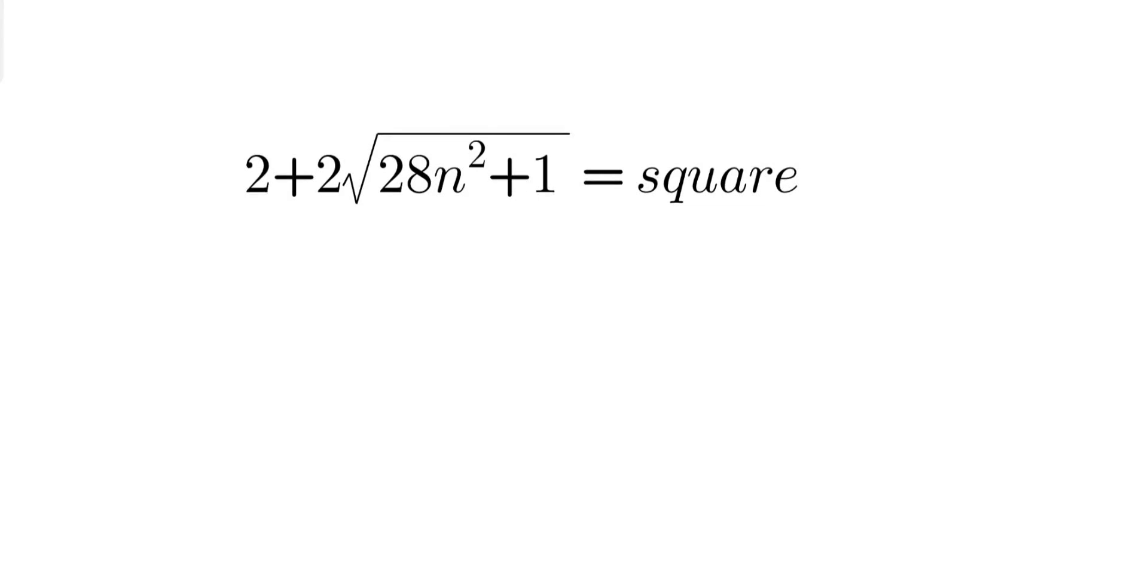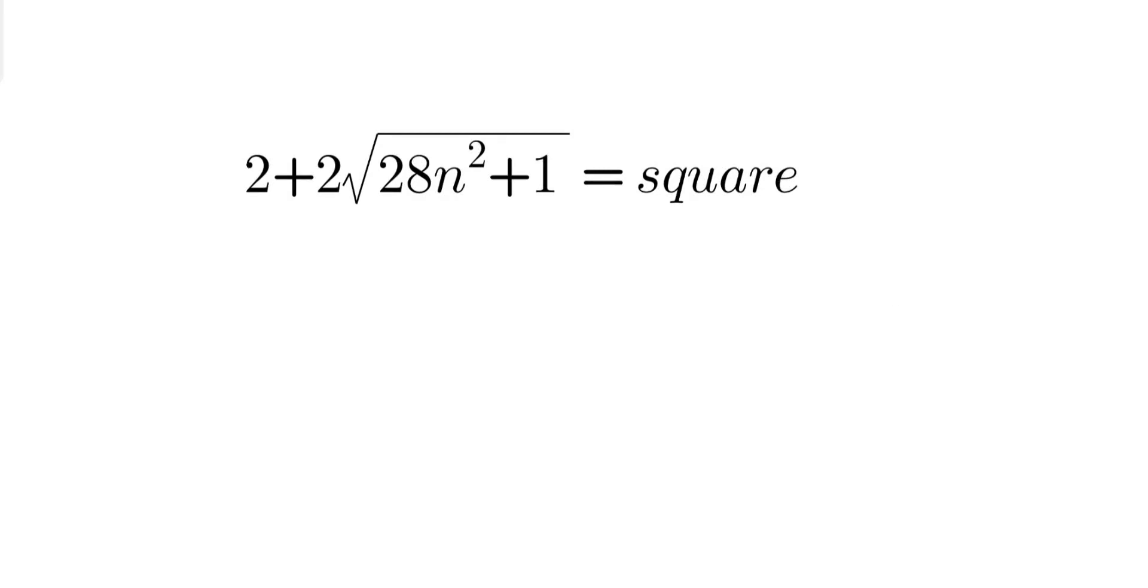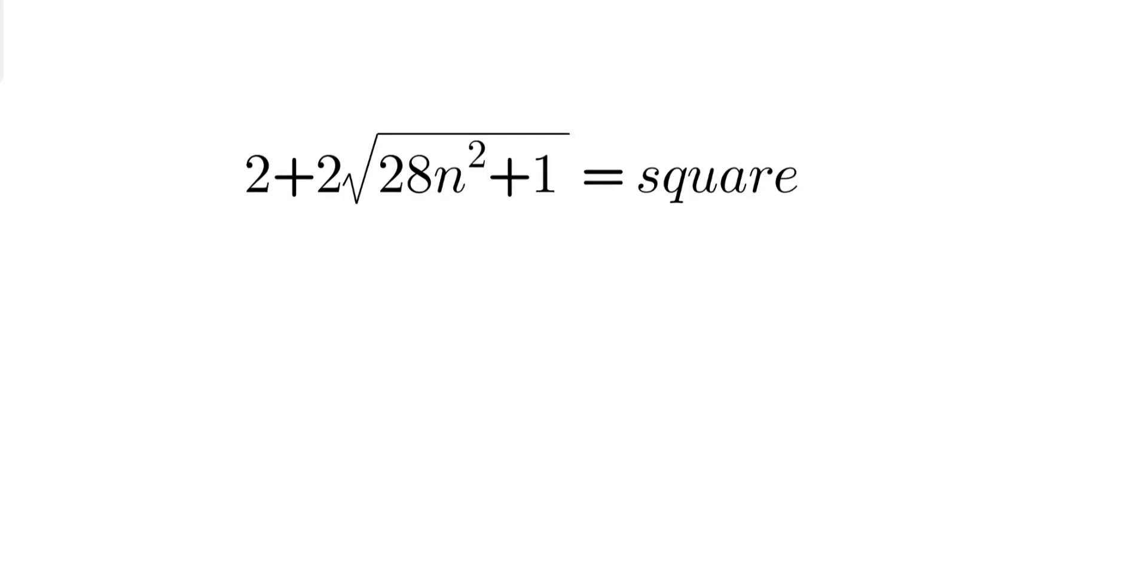Hello everyone, today we are going to solve a question from the Kürschák math competition Hungary. This question is taken from 1969 and here we have to prove that if 2 + 2√(28n² + 1) is an integer, then that integer is always going to be a square.